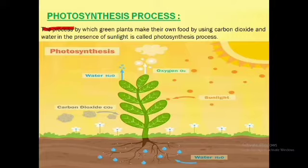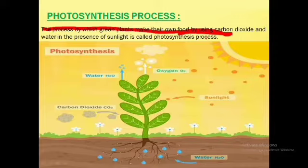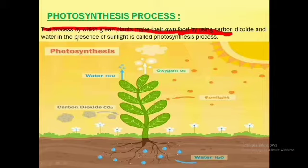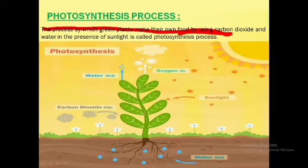The food-making process of plants is called the photosynthesis process. Photosynthesis is the process by which green plants make their own food by using carbon dioxide and water in the presence of sunlight. So photosynthesis is carried out by green plants, using carbon dioxide, water, and most importantly, the presence of sunlight to make their own food.